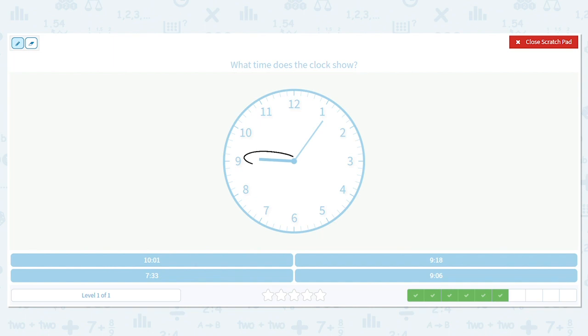It's between 9 and 10 for the hour. So that means it has to be 9 because we always make it go back. So we can get rid of that one and that one. So it's either 9:18 or 9:06. Well, my minute hand goes right here just past the 1. So that would be 5 plus 1 more makes it 6. So my time is 9:06.